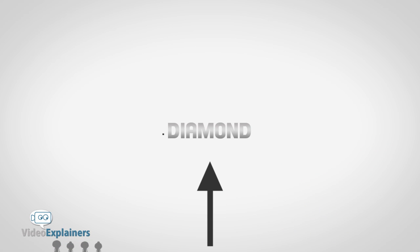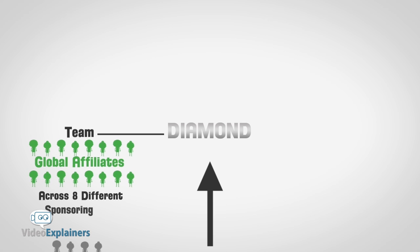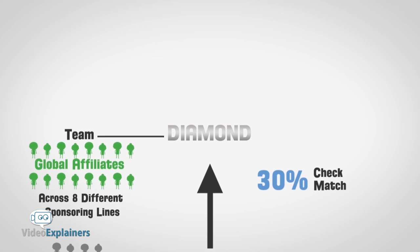The last up is the Diamond Affiliate. When you have a team of 16 global affiliates across eight different lines of sponsoring, you then get 30% check match on your entire team.